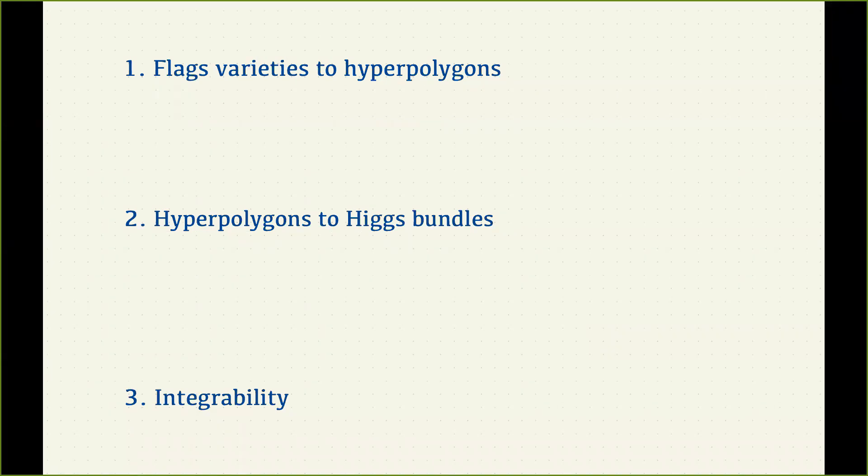These spaces are examples, at least on the Higgs branch side, of what he was speaking about, and we'll also be making contact with the same integrable system that he was just speaking about at the end of his talk. So that works out nicely. In some sense the basic ingredient here are flag varieties, and that's where I'll start, taking the point of view of them similarly to Alex as quiver varieties.